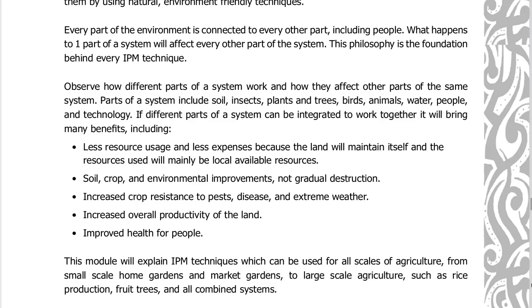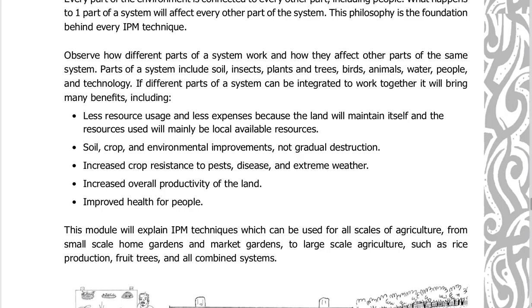Every part of the environment is connected to every other part, including people. What happens to one part of a system will affect every other part of the system — this philosophy is the foundation behind every IPM technique. Observe how different parts of a system work and how they affect other parts. Parts of a system include soil, insects, plants and trees, birds, animals, water, people, and technology. If different parts of a system can be integrated to work together, it will bring many benefits, including less resource usage and less expenses, because the land will maintain itself and the resources used will mainly be locally available.